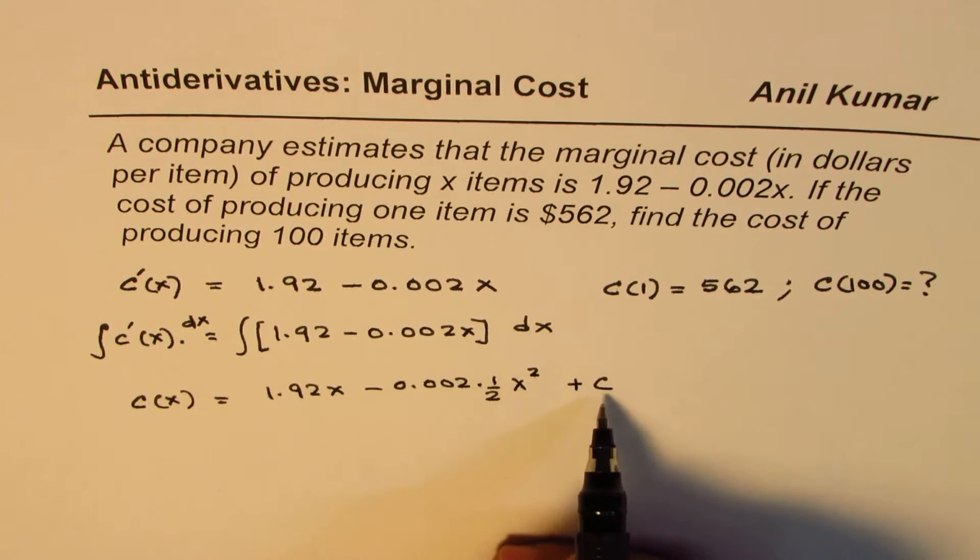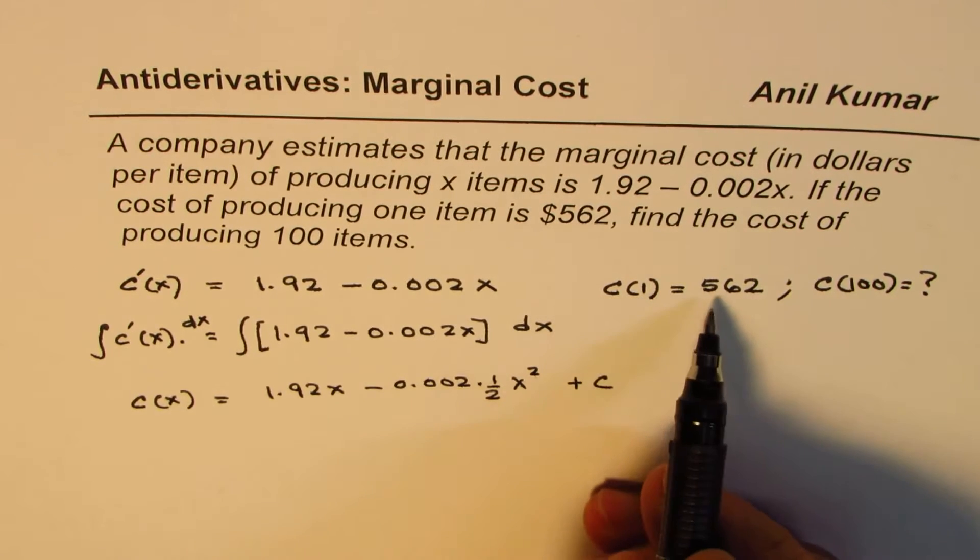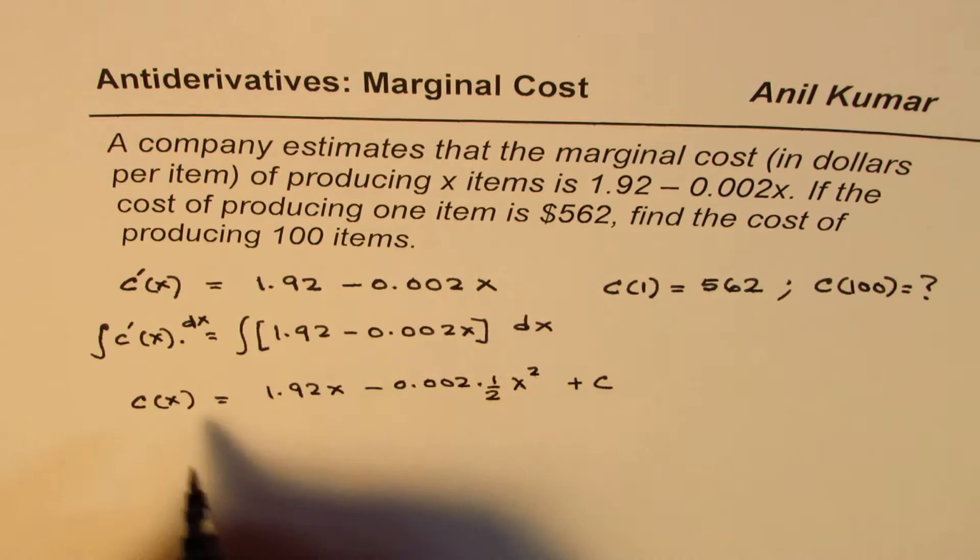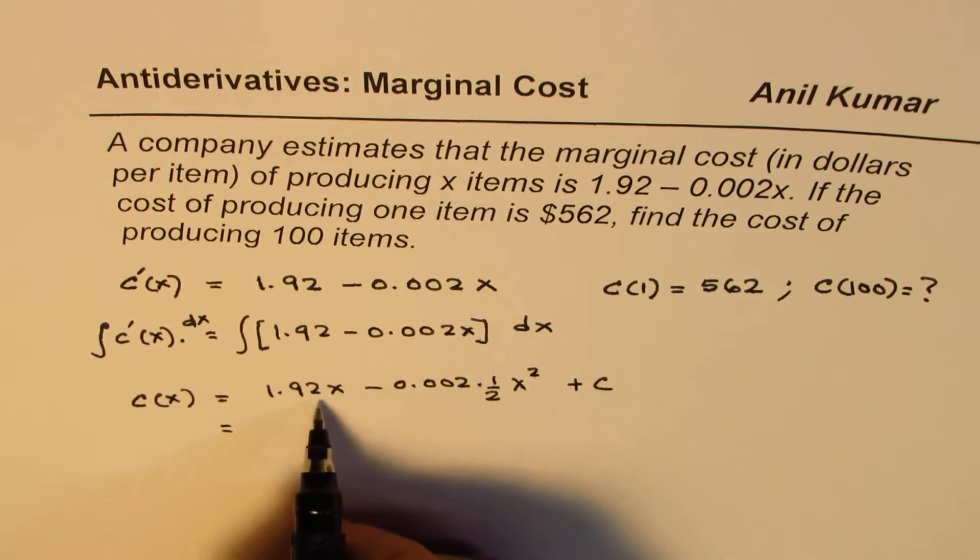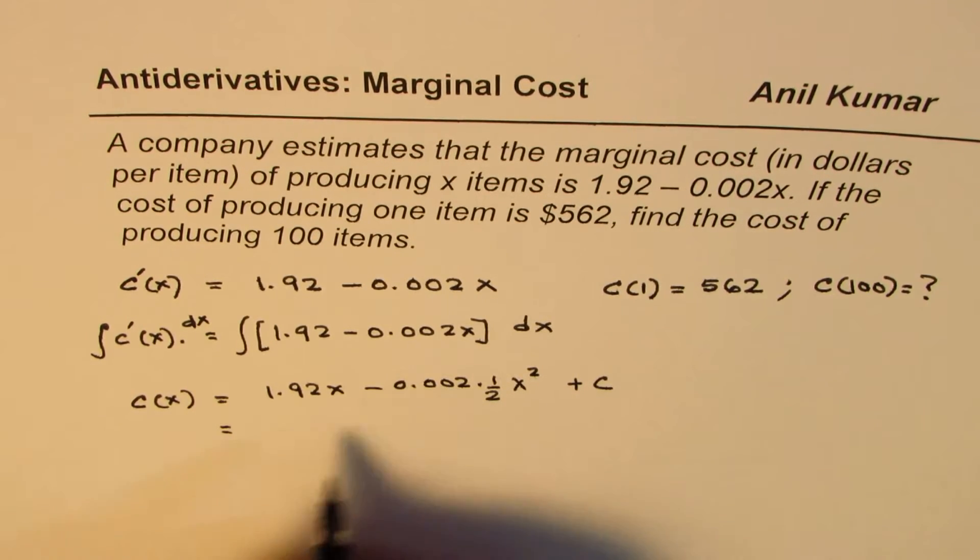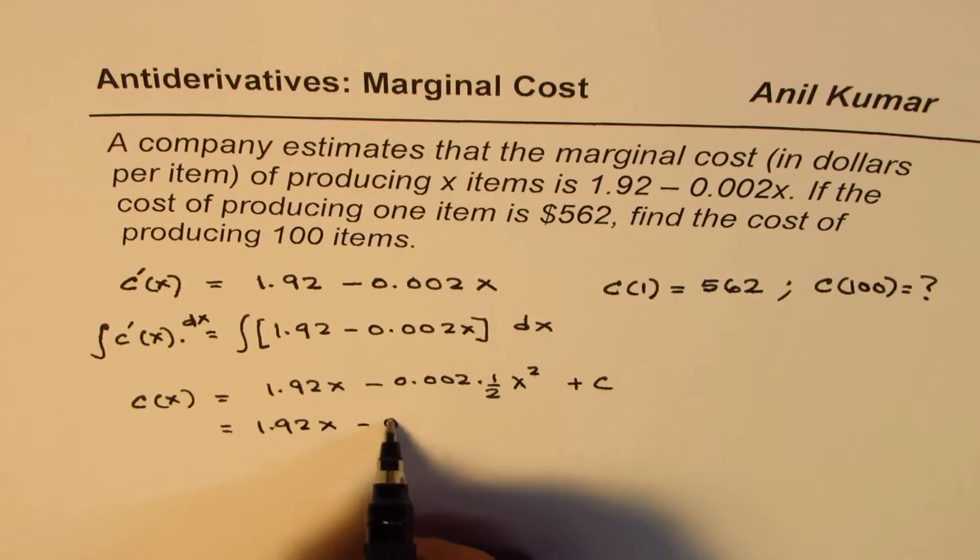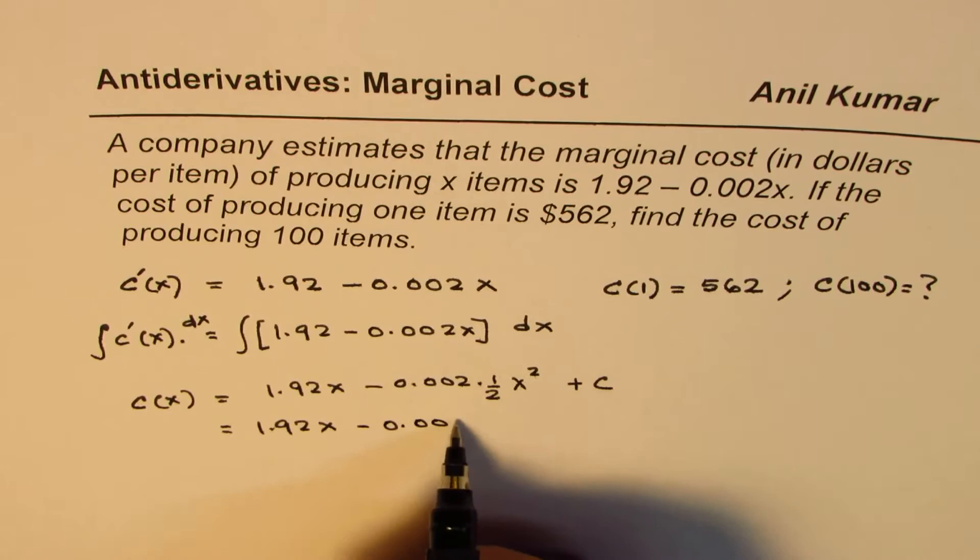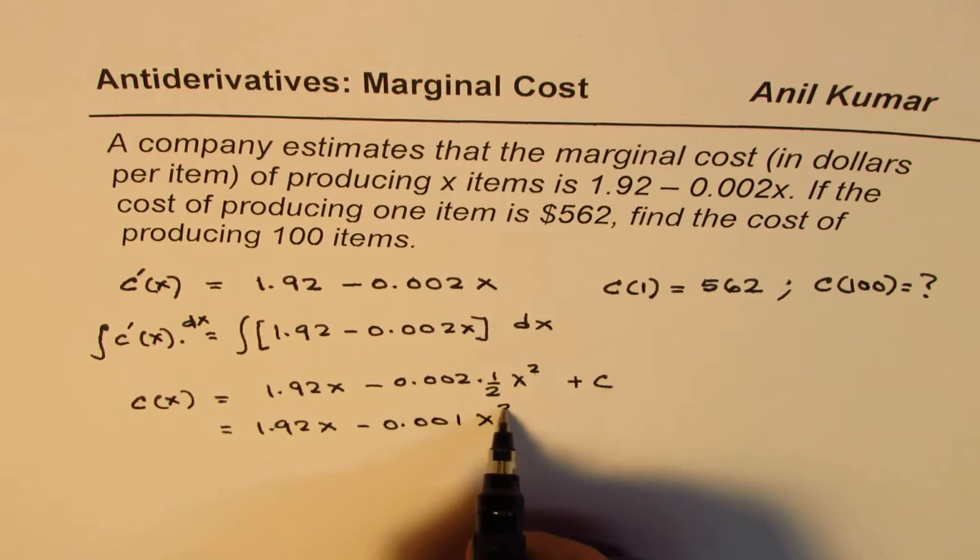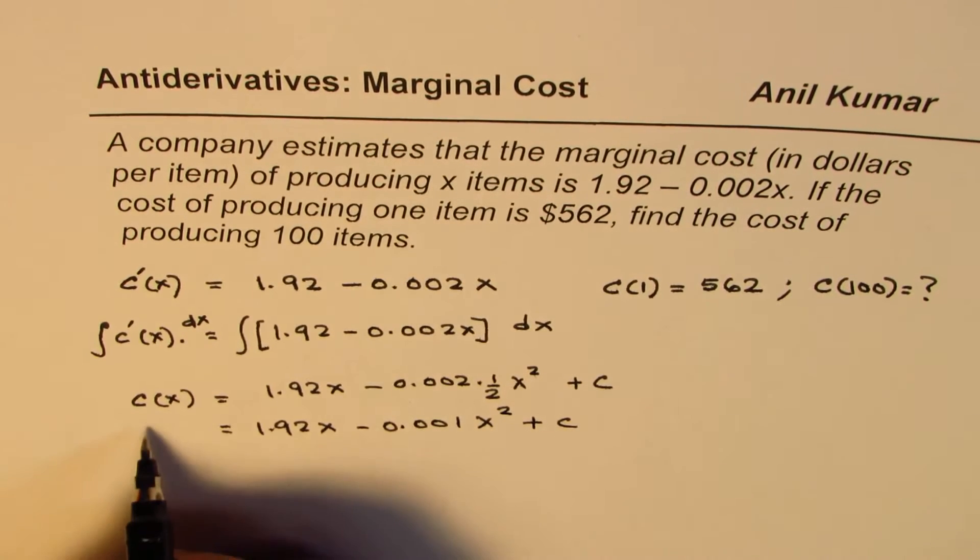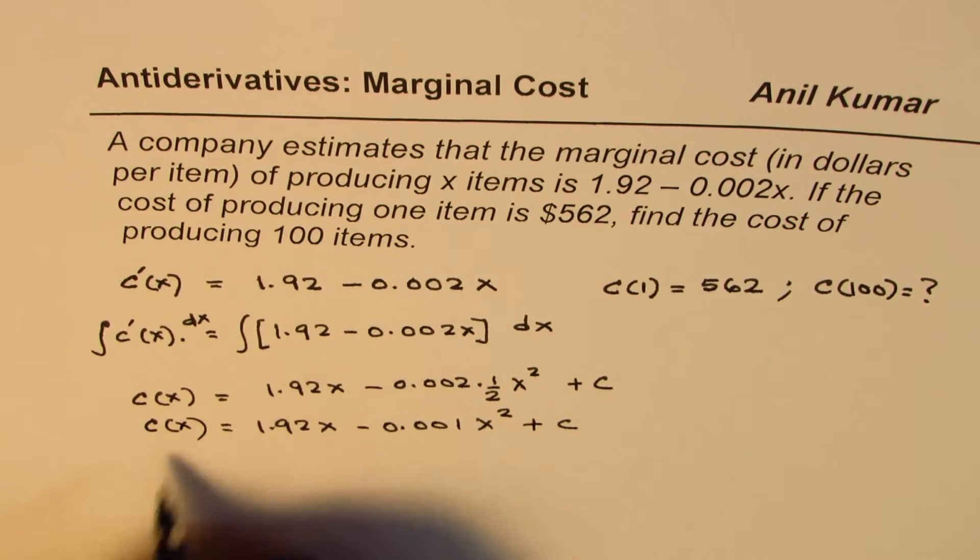Now to find the value of C, we can use the initial condition C(1) equals 562. Let me simplify this a bit, dividing by 2. So we get 1.92x minus 0.001x squared plus C is the cost function.